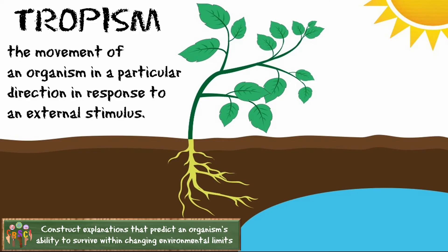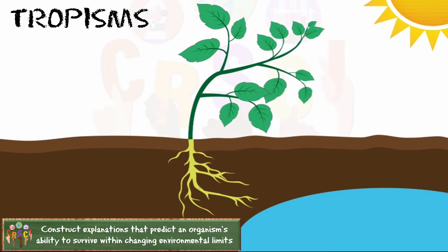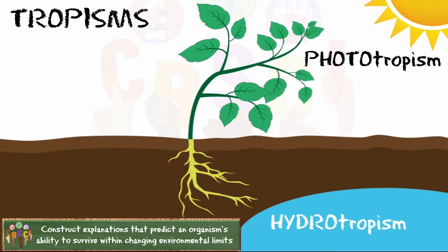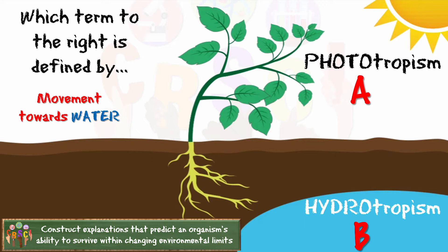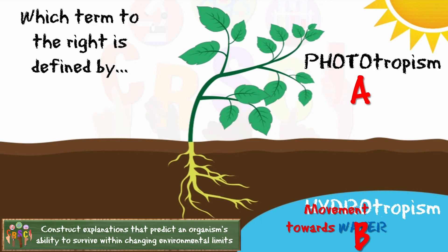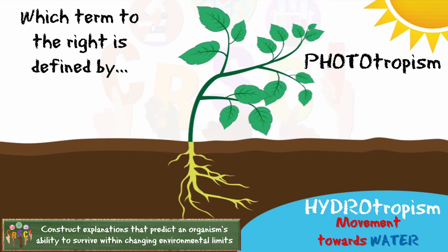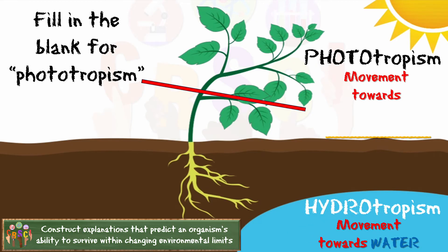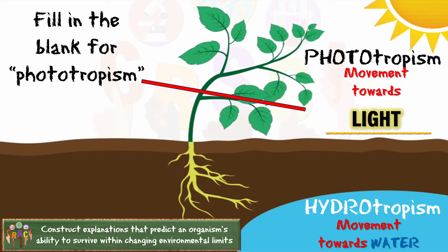These are called tropisms, and there are many different types. Which term do you think represents movement towards water? It's gotta be hydrotropism, right? Right. And phototropism must mean movement towards light, Mickens.